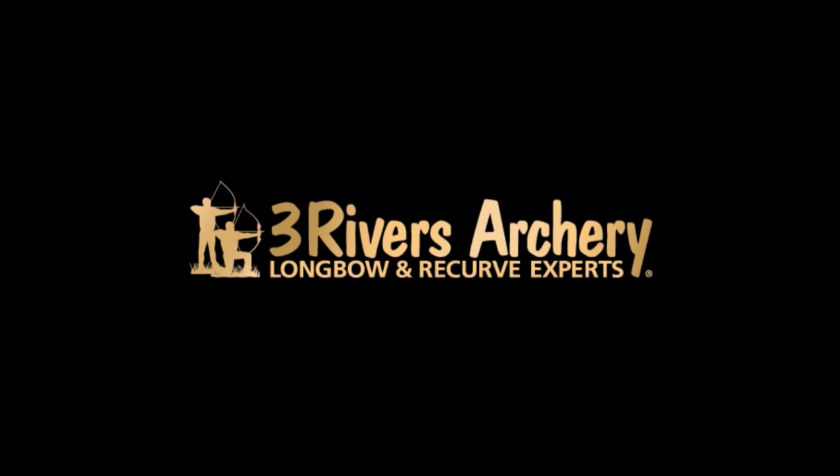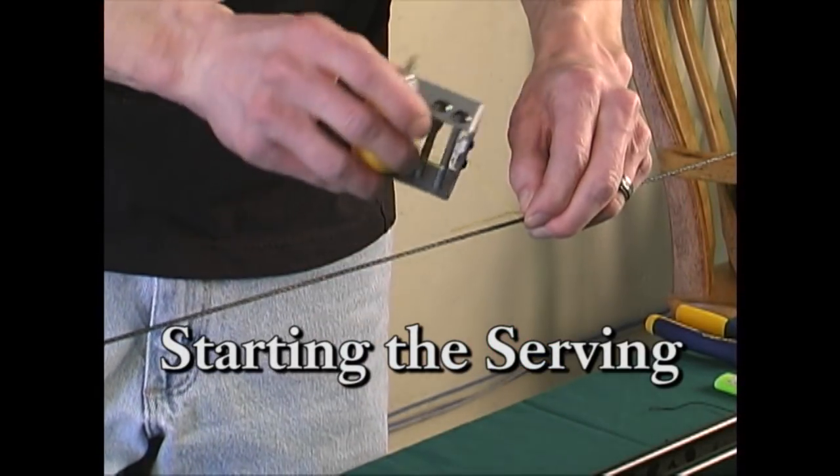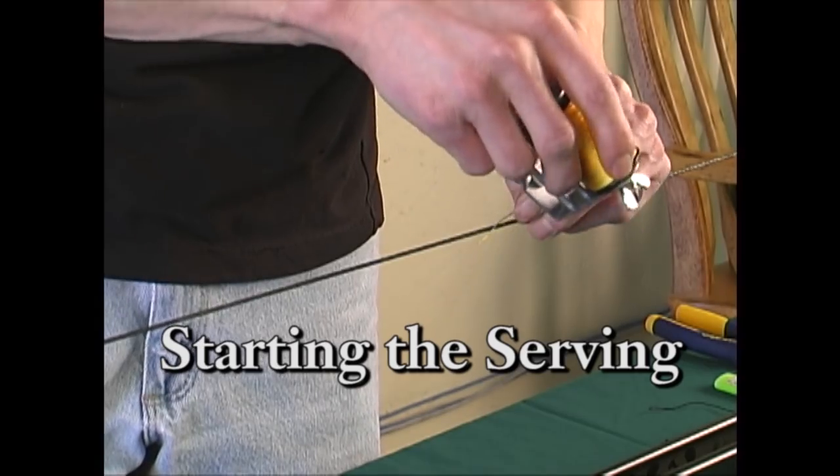Three Rivers Archery, your longbow and recurve experts. How to serve a bowstring. The easiest way to start serving a bowstring is to lay about 2 inches of the end of the serving down flat with the bowstring.